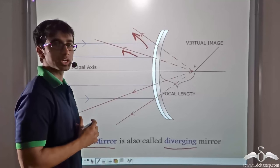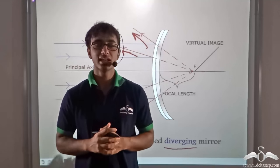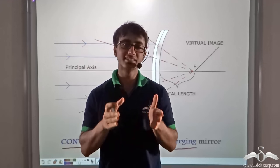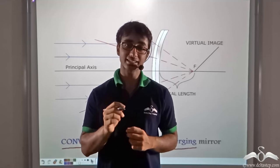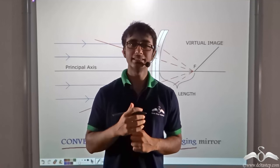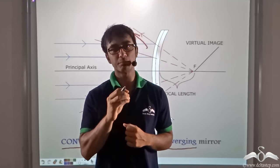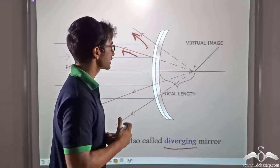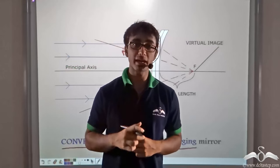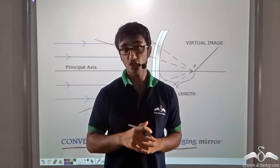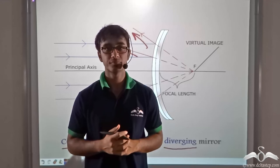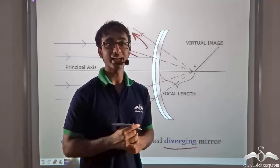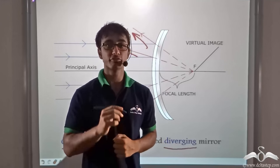Taking a quick recap: we learnt about concave mirrors and convex mirrors and their properties when a parallel beam of light hits them. In the case of a concave mirror, if parallel rays are incident such that the principal axis is also parallel to the rays, the rays after reflection get concentrated at the focus of the concave mirror. In the case of a convex mirror, after parallel rays hit it, they spread outwards after reflection — they diverge — and seem to be coming from a point behind the mirror, which is called the focus of the convex mirror.